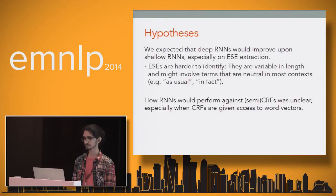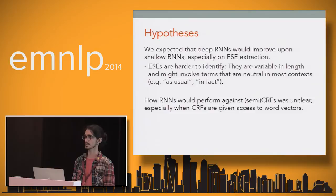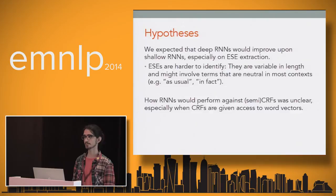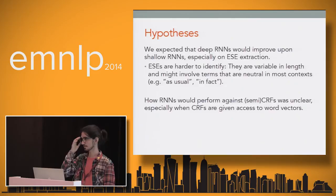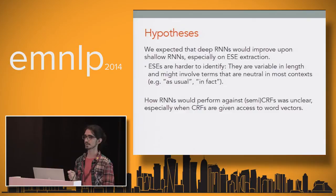Before doing the experiments, we hypothesized that deep RNNs would outperform shallow RNNs, based on previous results on different tasks, and that this would be especially visible on ESE detection. ESEs are more difficult than DSEs in the sense that they can involve phrases that in most contexts don't carry any sentiment or attitude — you have to get a good grasp of the context around the phrase to notice if it conveys an opinion. How RNNs would compare against the CRF or semi-Markov CRF was unclear, especially when CRFs also have access to pre-trained word vectors in addition to all the other feature sets.